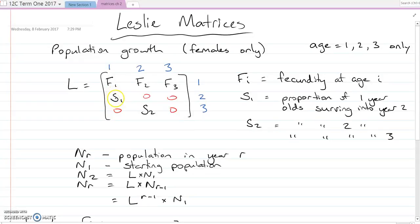So if 50% of them survived, we'd have a 0.5. Similar to the previous example, we can think of on the top they're from and on the right is to. So this S1 is from age one into age two.